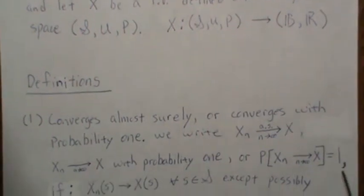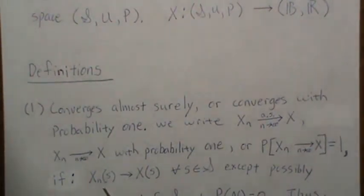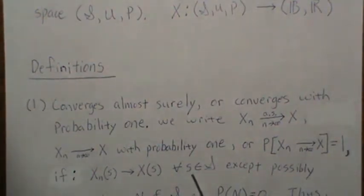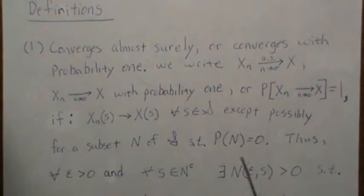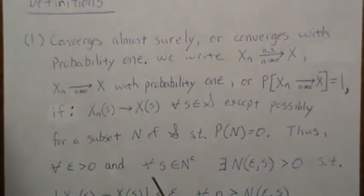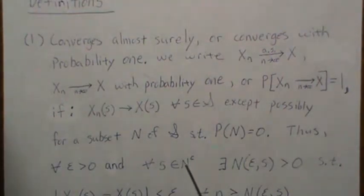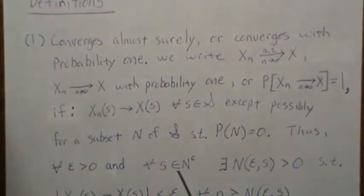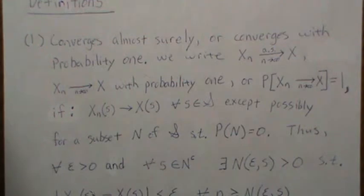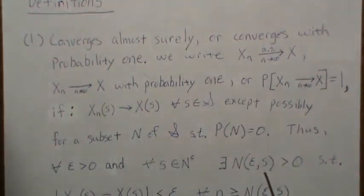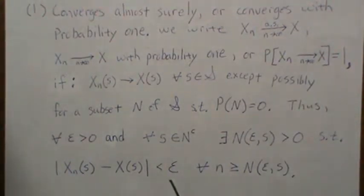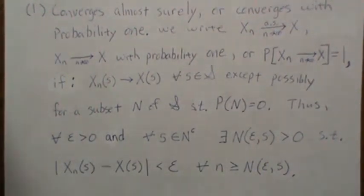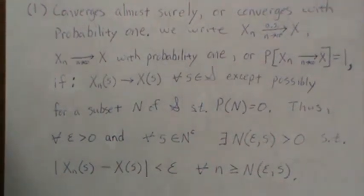This means X_n converges to X for every element in our sample space except possibly a subset with probability zero. Formally: for every ε > 0 and for all s in the complement set (which has probability zero of occurring), there exists an N, which is a function of ε and the element s, such that |X_n(s) - X(s)| < ε for all n greater than this N. That is convergence almost surely.